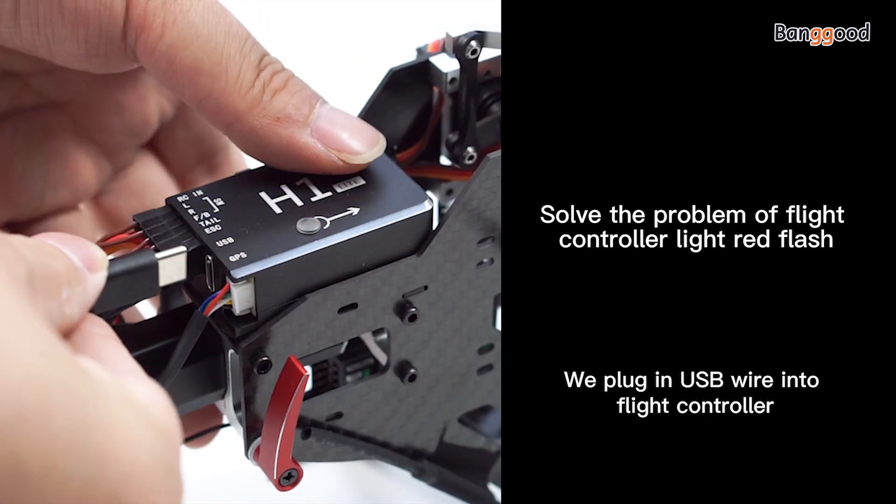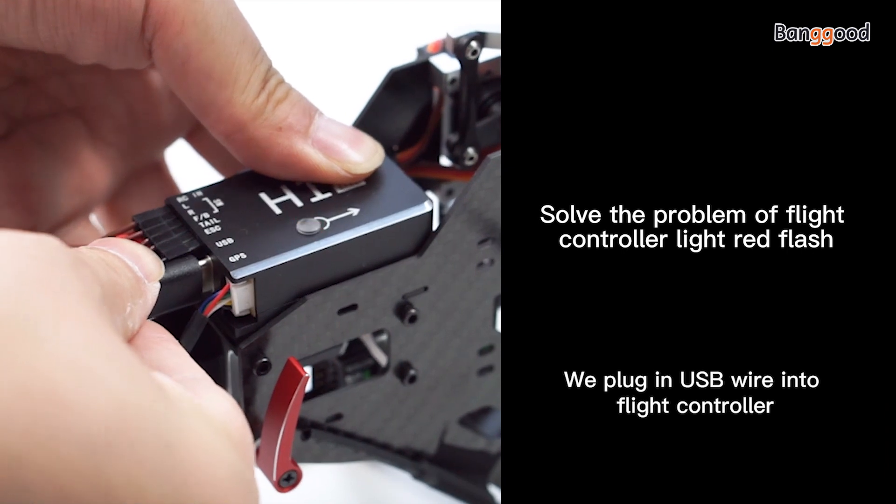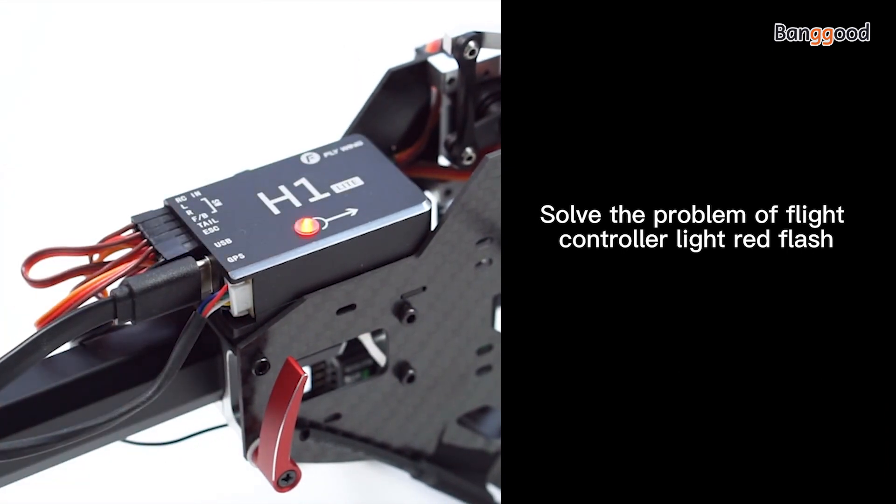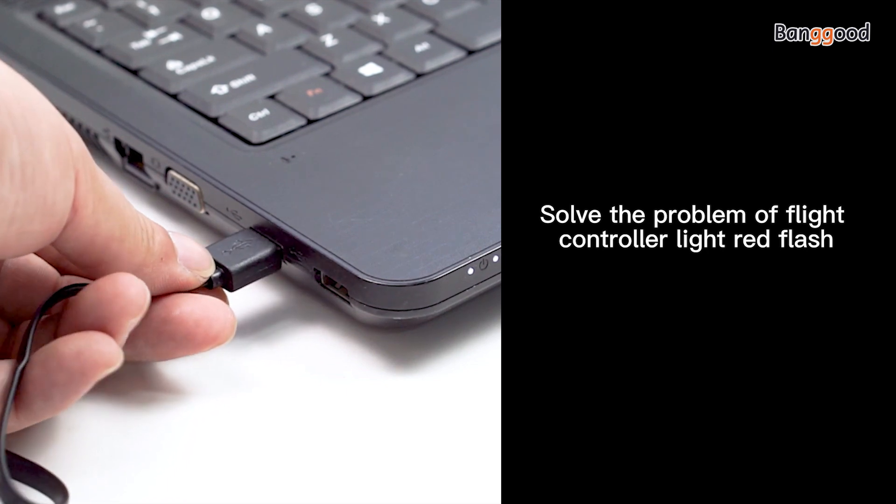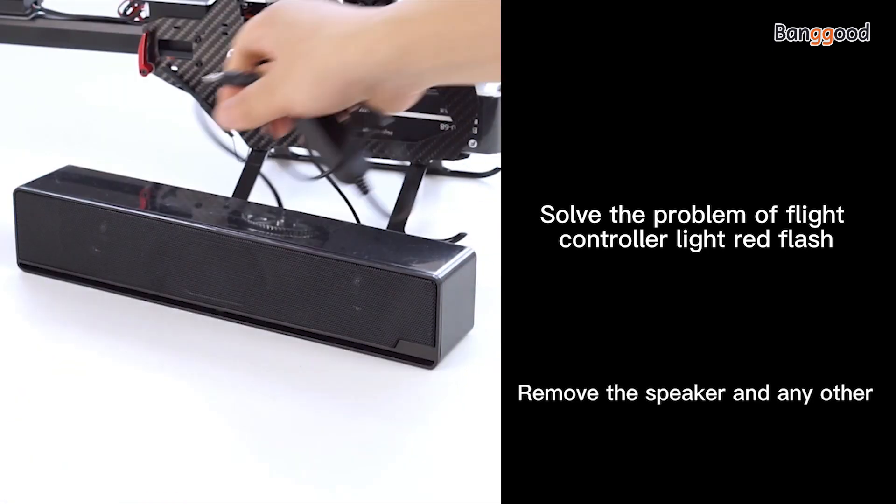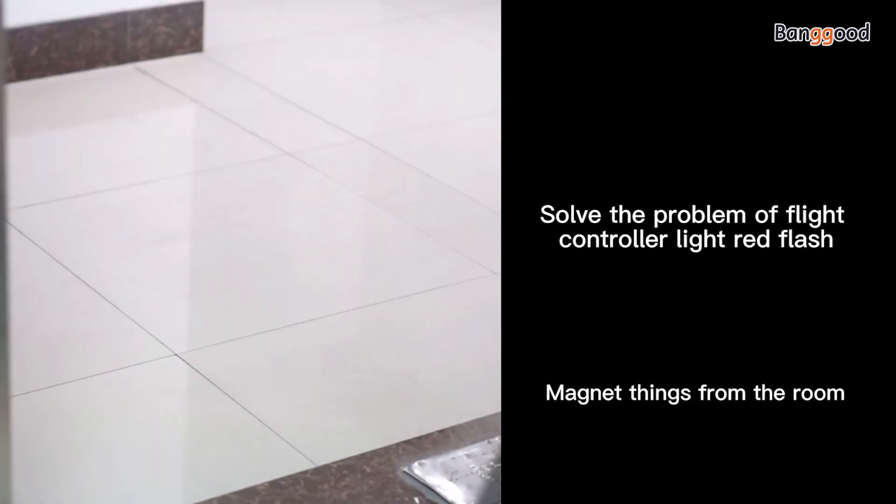We plug in USB wire into flight controller. The other end plug in computer. Remove the speaker and any other magnet scenes from the room.